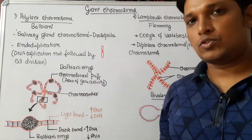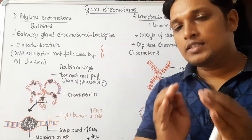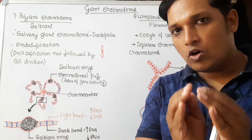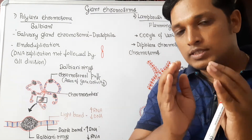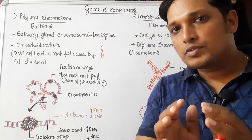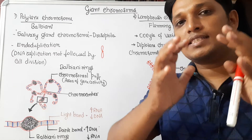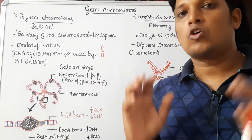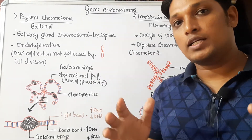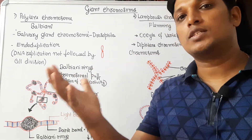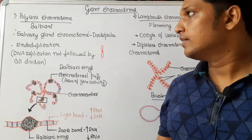What are giant chromosomes? If you consider a normal chromosome, giant chromosomes are more than the size of a normal chromosome. They may be 200 times to 2000 times larger.